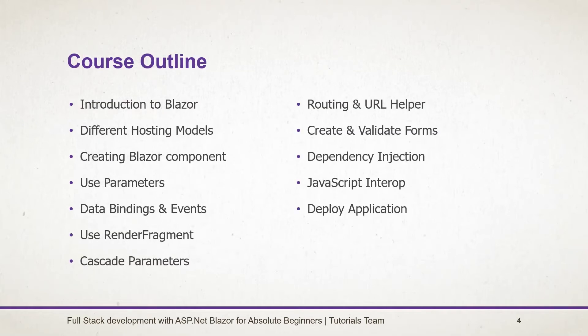The course outline includes: introduction to Blazor and web assembly and understanding how it works; checking different kinds of hosting models supported by Blazor for creating applications; creating our first Blazor component and using it; understanding how to use parameters to pass values to the component; binding fields and attaching events on controls; using render fragments to generate templates; and understanding cascade parameters and passing multiple values, as well as using routing for the component.